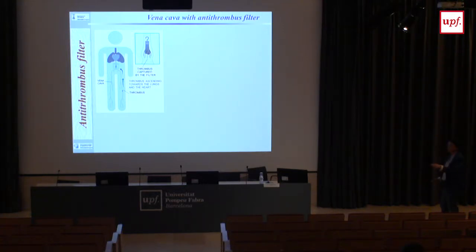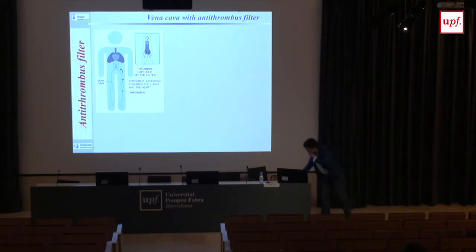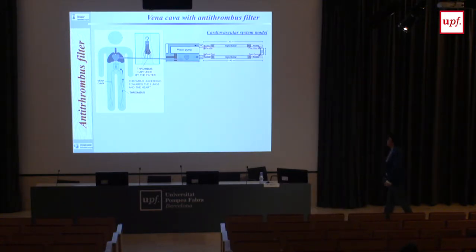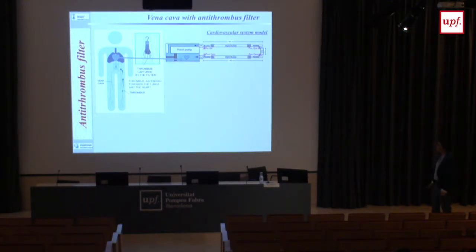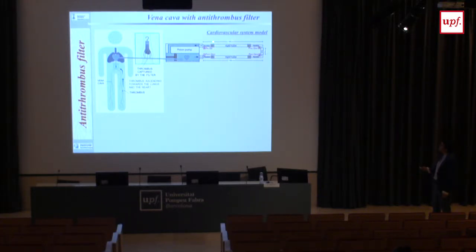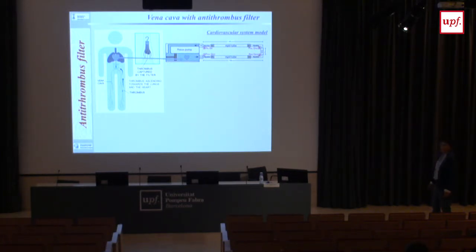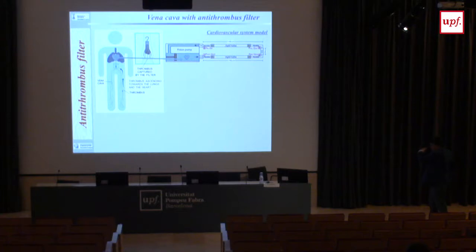The filter is placed in the vena cava for a while and then removed, hopefully having caught the thrombus. To model this in the lab, we used a piston pump where you can set different physiological or steady flows. We built all the circuits, with the vena cava model here, flow rate and pressure sensors in and out. When the flow is steady there is no problem, but when the flow is periodic — like in a femoral or carotid artery — there can be changes in pressure both in shape and position.